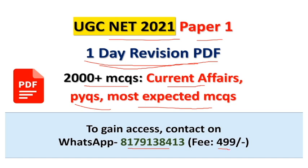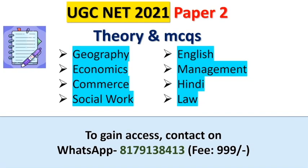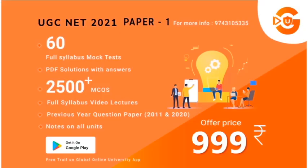Don't waste your time — join as early as possible. It will boost your confidence and your revision as well. If you want PDFs for Paper 2, which include theory and MCQs for various subjects, you can contact the number below. The fees are Rs. 499 for Paper 1 and Rs. 999 for Paper 2.